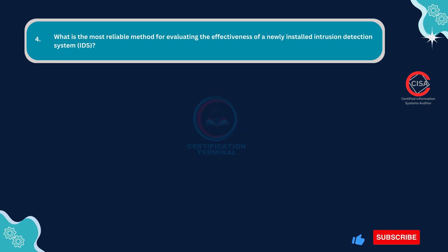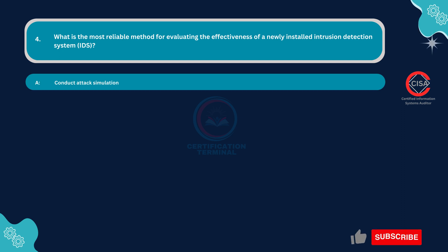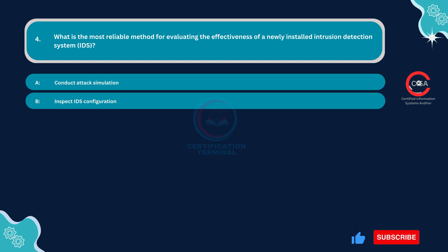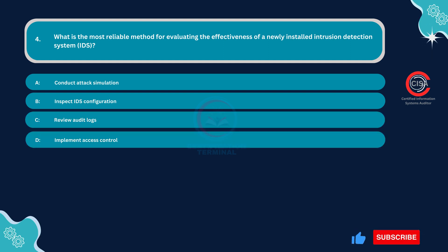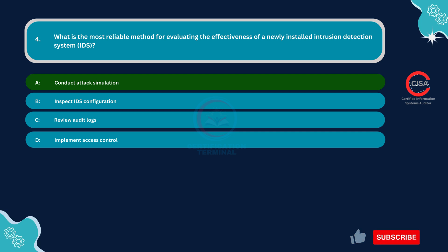Question number four: What is the most reliable method for evaluating the effectiveness of a newly installed intrusion detection system? Option A: Conduct attack simulation. Option B: Inspect IDS configuration. Option C: Review audit logs. Option D: Implement access control. The correct answer is Option A: Conduct attack simulation.